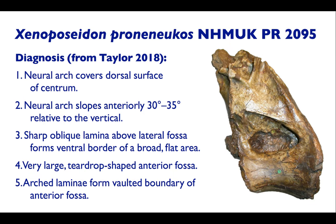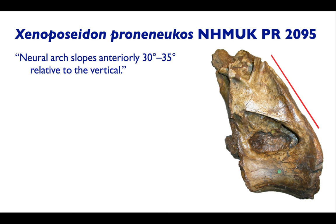Let me give you an example. This very handsome vertebra on the right is the left lateral view of a dorsal vertebra of a sauropod, Xenoposeidon, which I and Darren Naish named in 2007. The most recent paper describing this has a five-point diagnosis, and the one I want to point out is: neural arch slopes anteriorly 30 to 35 degrees relative to the vertical — and that red line shows you that slope.